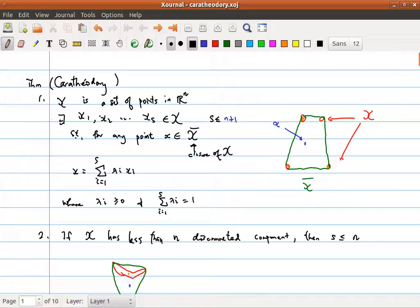The theorem says that we can always find s points where s will be less than n plus 1. In this case, s will be less than 3 because it is n dimension, such that this point x is a convex combination of these s points. So in this case here, we can find these three points, and this x will be a convex combination of these three points.